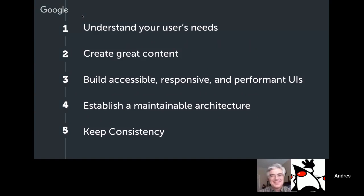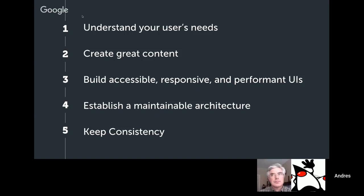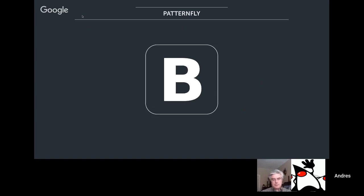We've covered all five secrets: understanding user needs, creating great content, building accessible/responsive/performant UIs, establishing CSS architecture for the future, and maintaining consistency — all while exploring Bootstrap. Now it's time to put it all together in a production-ready, mobile-first, responsive, and accessible enterprise dashboard. We're going to use PatternFly — an open source design system based on Bootstrap used at Red Hat to keep consistency across UIs.